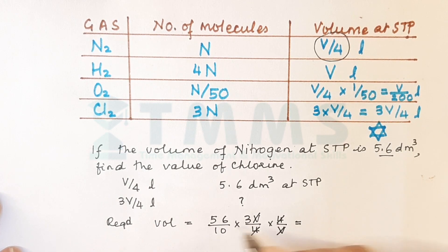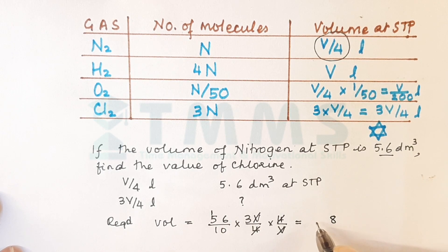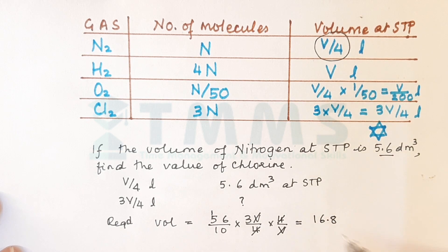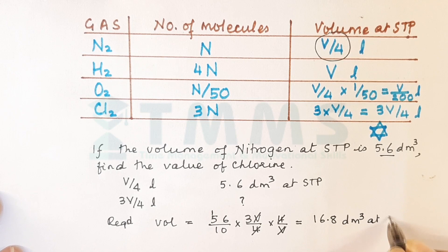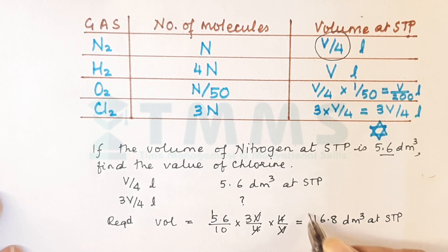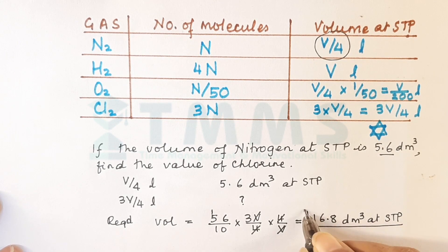And what would we get this as? 3 into 56. So 3 sixes 18, 3, 5, 15, and 1, 16, and divided by 10, so 16.8 DM cube at STP.